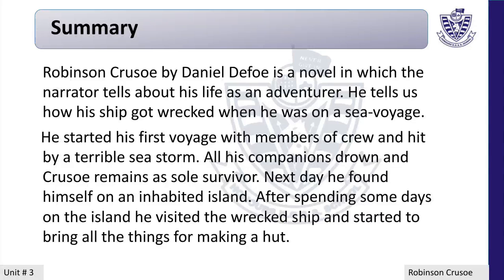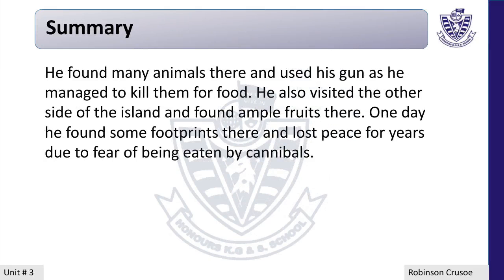Robinson Crusoe by Daniel Defoe is a novel in which the narrator tells about his life as an adventurer. He tells us how his ship got wrecked when he was on a sea voyage. He started his first voyage with members of the crew and was hit by a terrible sea storm. All his companions drowned and Crusoe remained the sole survivor. Next day he found himself on an uninhabited land. After spending some days on the island, he visited the wrecked ship and started to bring all the things for making a hut. He found many animals there and used his gun to kill them for food. He also visited the other side of the island and found ample fruits there. One day he found some footprints and lost peace for years due to fear of being eaten by cannibals.